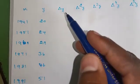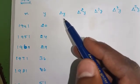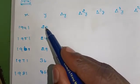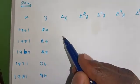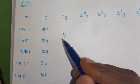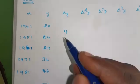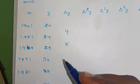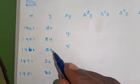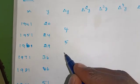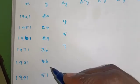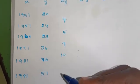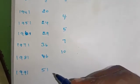Δy means: 24 minus 20 = 4; 29 minus 24 = 5; 36 minus 29 = 7; 46 minus 36 = 10; 51 minus 46 = 5.